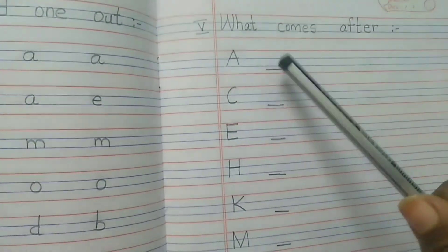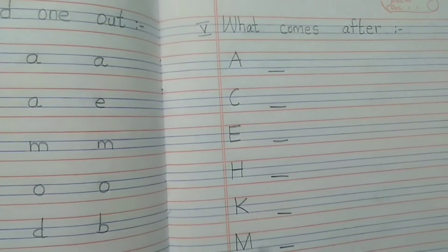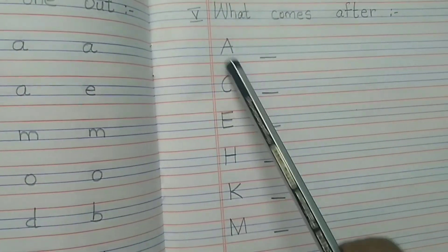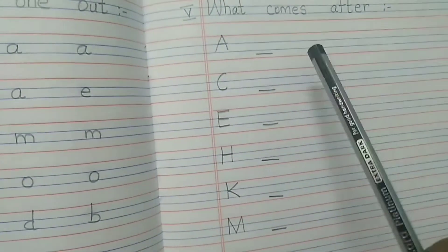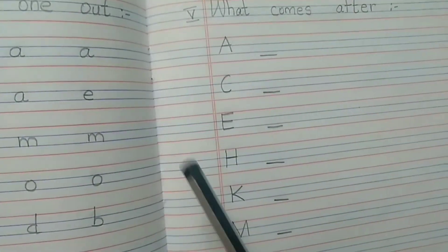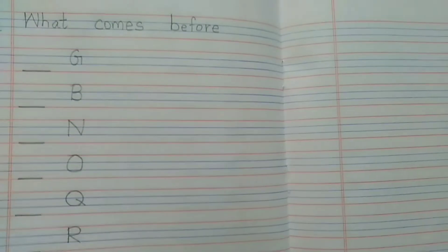After A, what comes? What comes after A? These are all capital letters. What comes after capital A? If it's in capital letter, you write the same capital letter. If it is in small letter, you can write in small letters. And then you will have next main, what comes before.